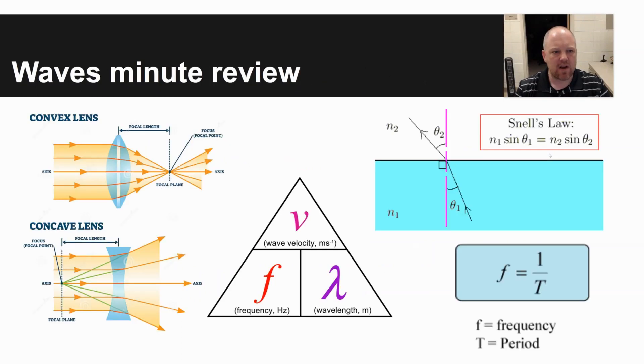First, just a one-minute waves review. On the top left, pictures show convex and concave lenses. Convex lenses, they are thickest in the center. What they do is produce real images. They invert images. So whatever looks like it would be on the top now appears on the bottom.